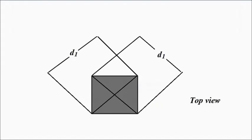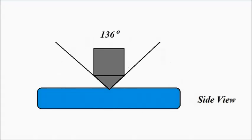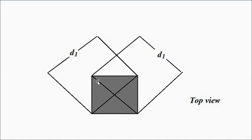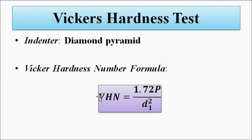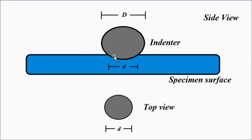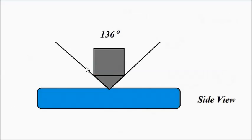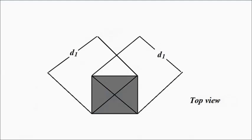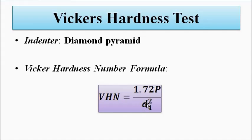An important detail for the Vickers test is the angle between the faces of the diamond pyramid indenter, which should be 136 degrees. The side view and the top view of the indentation should not be confused. In the Brinell test the indentation is circular (spherical indenter), but for Vickers, because a diamond pyramid is used, the indentation looks like a square from the top, and the diagonal length d1 of this indentation is critical for the hardness number calculation.